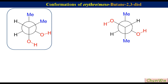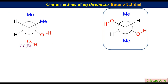We can label this conformation as GGE, where the first G indicates the orientation of the methyl groups, the second G indicates the orientation of the hydroxyl groups, and E stands for erythro. In the other conformation, the two methyl groups are anti to each other and the same is the case with the two hydroxyl groups, so we label it AAE, where A stands for anti.